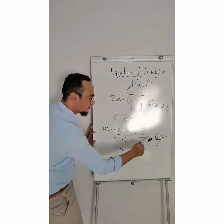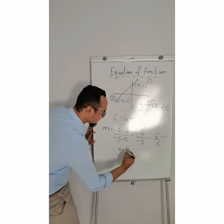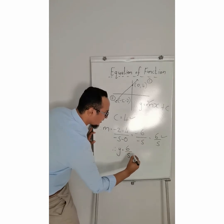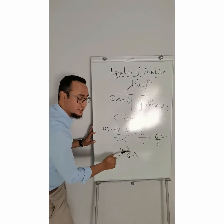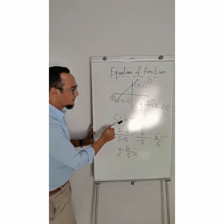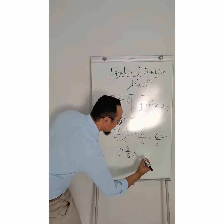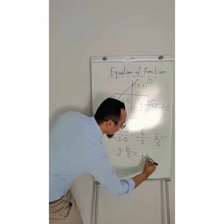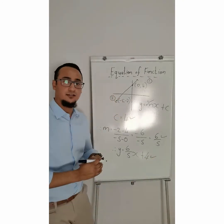y is equal to my gradient. What's my gradient? 6 over 5 x. This can also be in decimal form. And what is my intercept, or y-intercept, or c value? It is positive 4, and that would be my third mark.